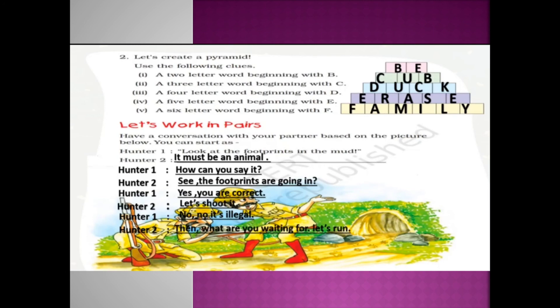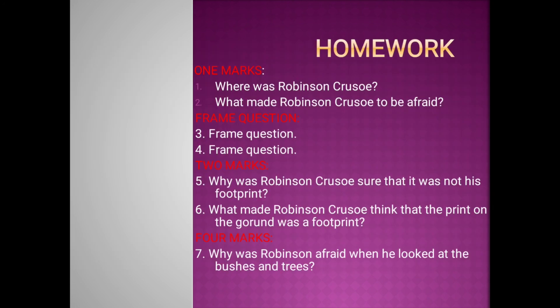Next, let's work in pairs — have a conversation with your partner based on the picture given. This is also purely on your own. Here is a sample conversation: 'Look at the footprints in the mud — it must be an animal.' 'How can you say that?' 'See, the footprints are going in...' 'Yes, you are correct. Let's shoot it.' 'No, no, no — it's illegal.' 'Then what are you waiting for? Let's run!' These are the conversation between two hunters.